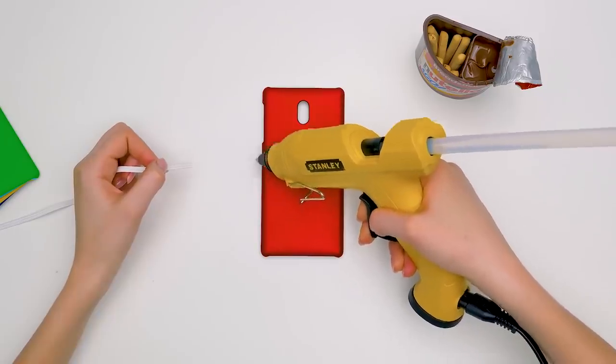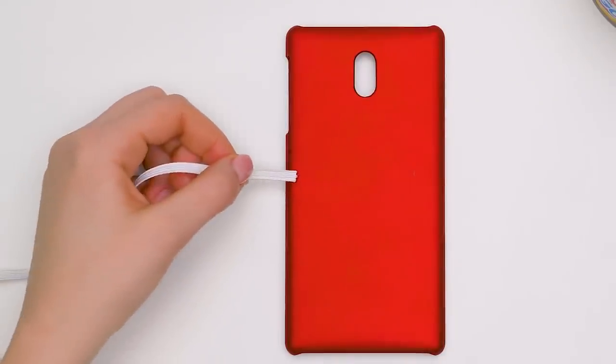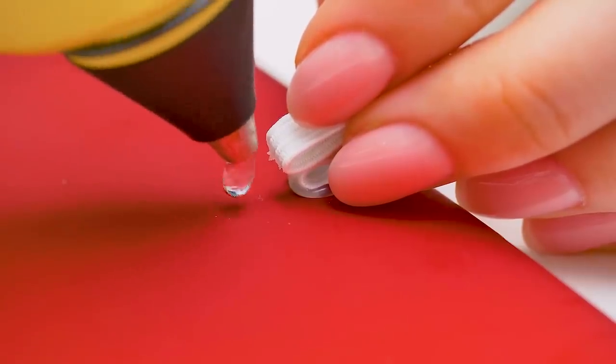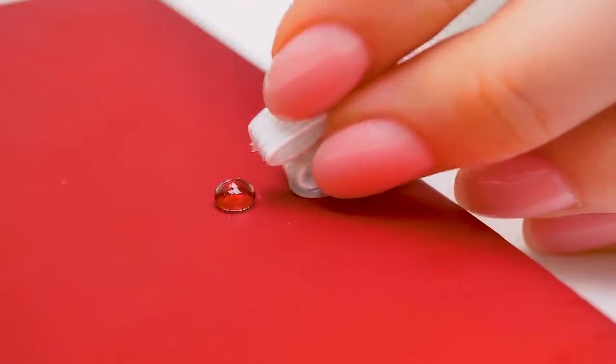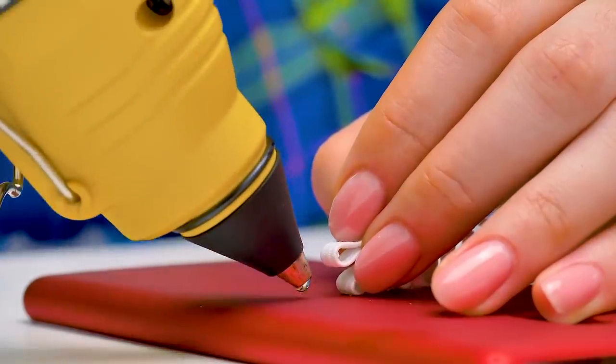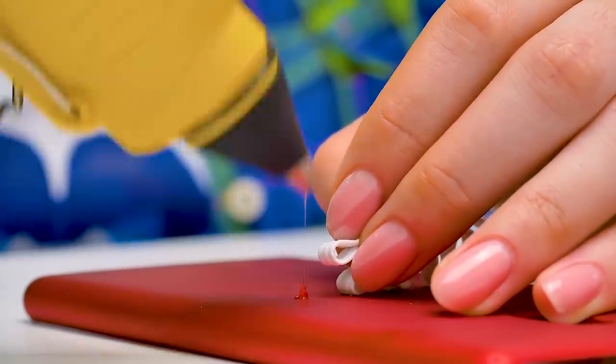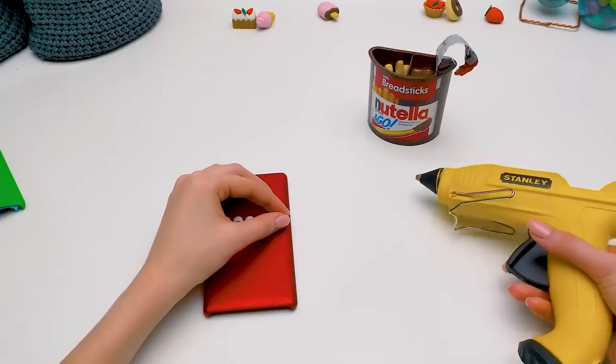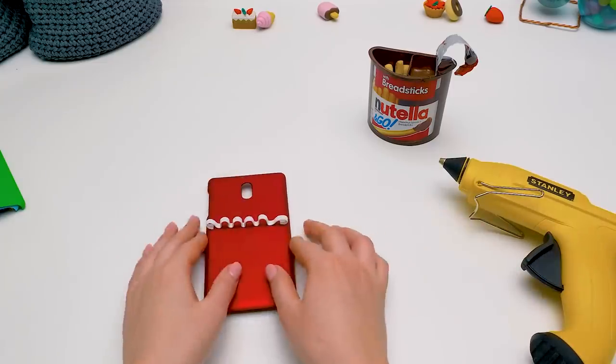Now, let's make some loops for our cookies with this wide rubber band and hot glue. Be careful with the hot glue, guys. It's very delicate work. You need to apply very small drops of glue. The bigger the case, the more cookies you can place on it.